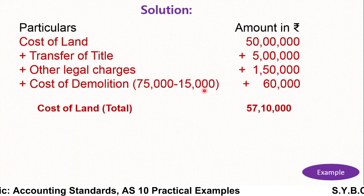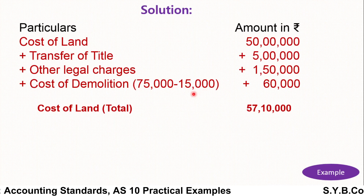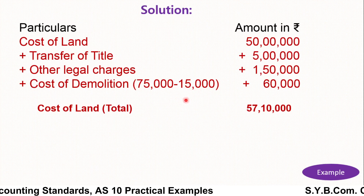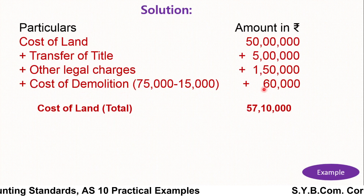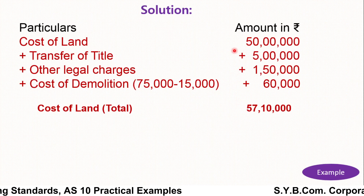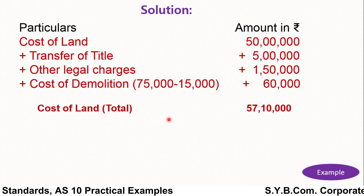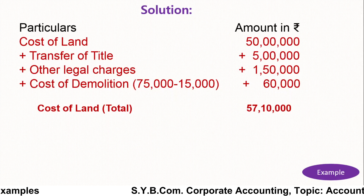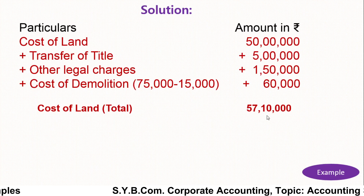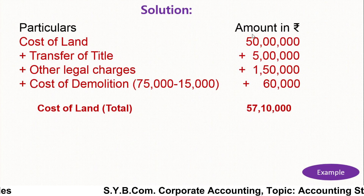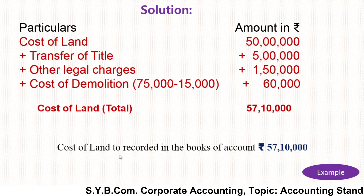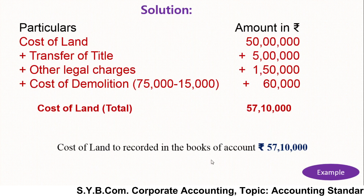However, we are getting rupees 15,000 from the sale of scrap of that building, so the actual net cost of demolition is rupees 60,000. By totaling all the amounts, we can calculate the cost of land, which comes to rupees 57,10,000. This is the amount to be recorded in the books of account as the cost of land.